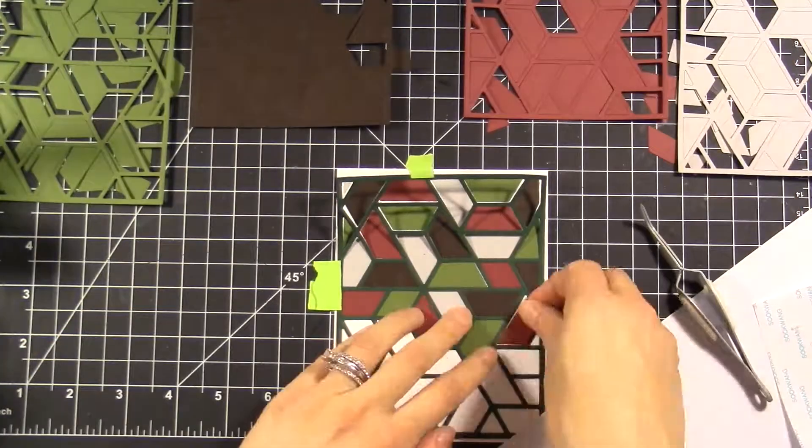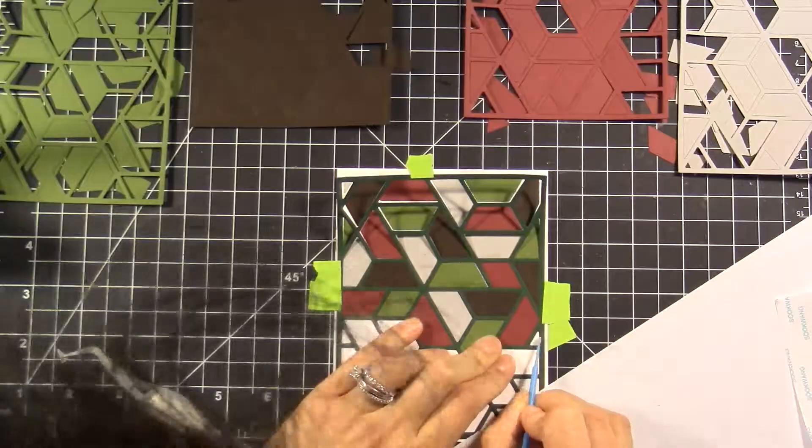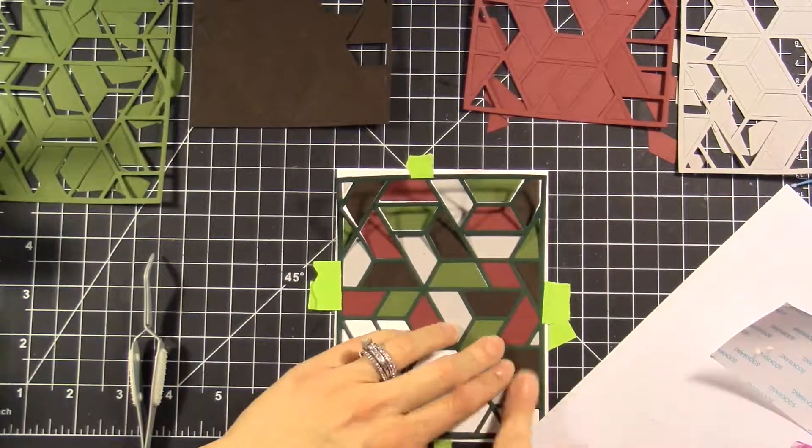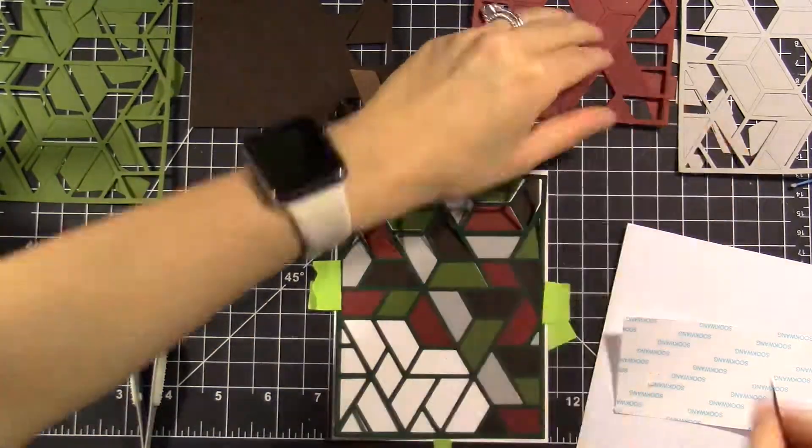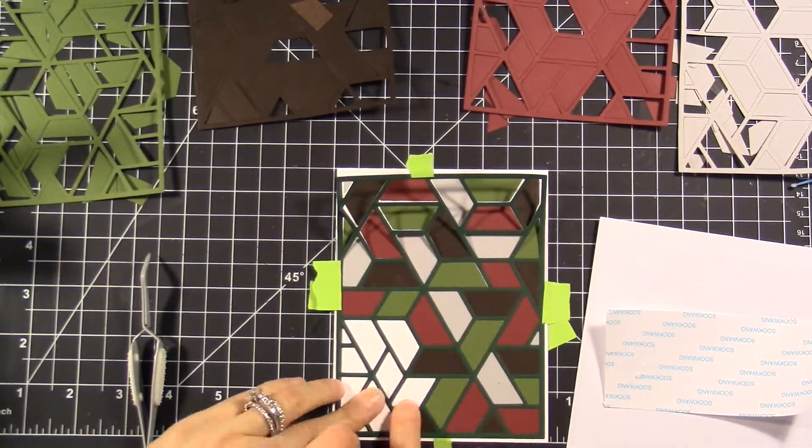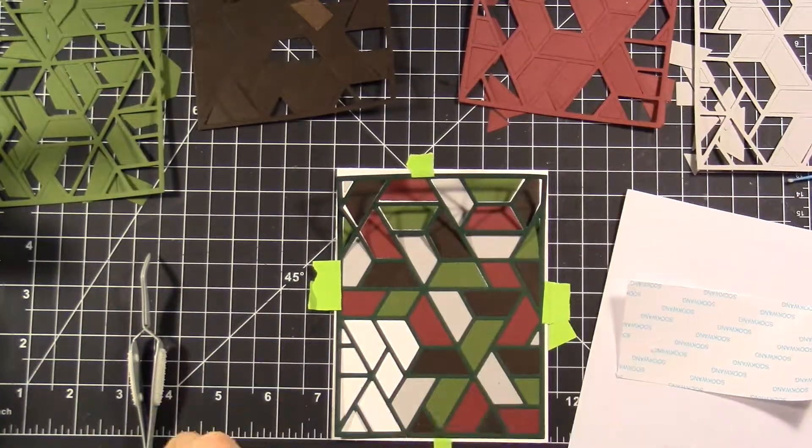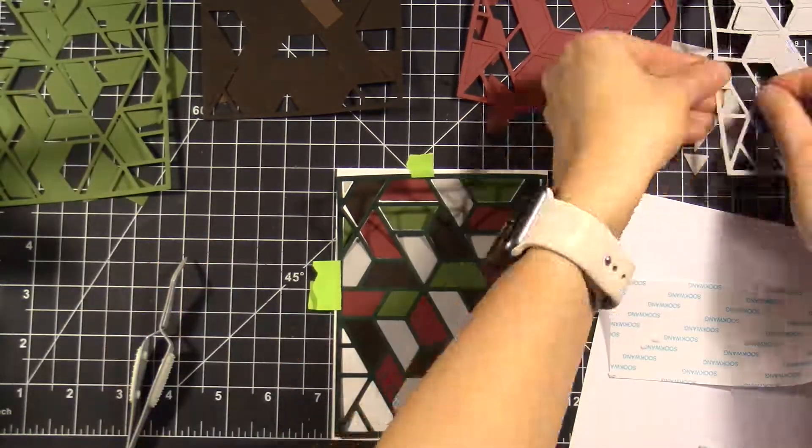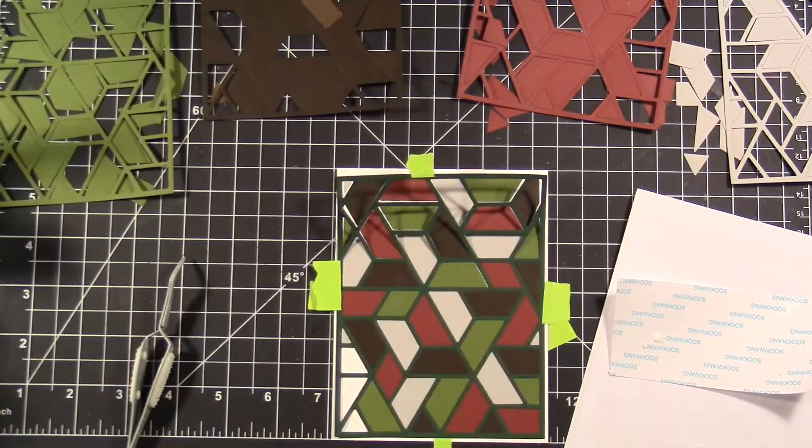But once you get to your second or third card, it gets a little bit easier because you only have so many pieces left. I tried to leave all the pieces where they were in the plate after die cutting them so that it was easier to just pick and place in the respective places on my card front. To attach them, I'm just using some basic snail adhesive as well as some Ranger multi-medium glue.